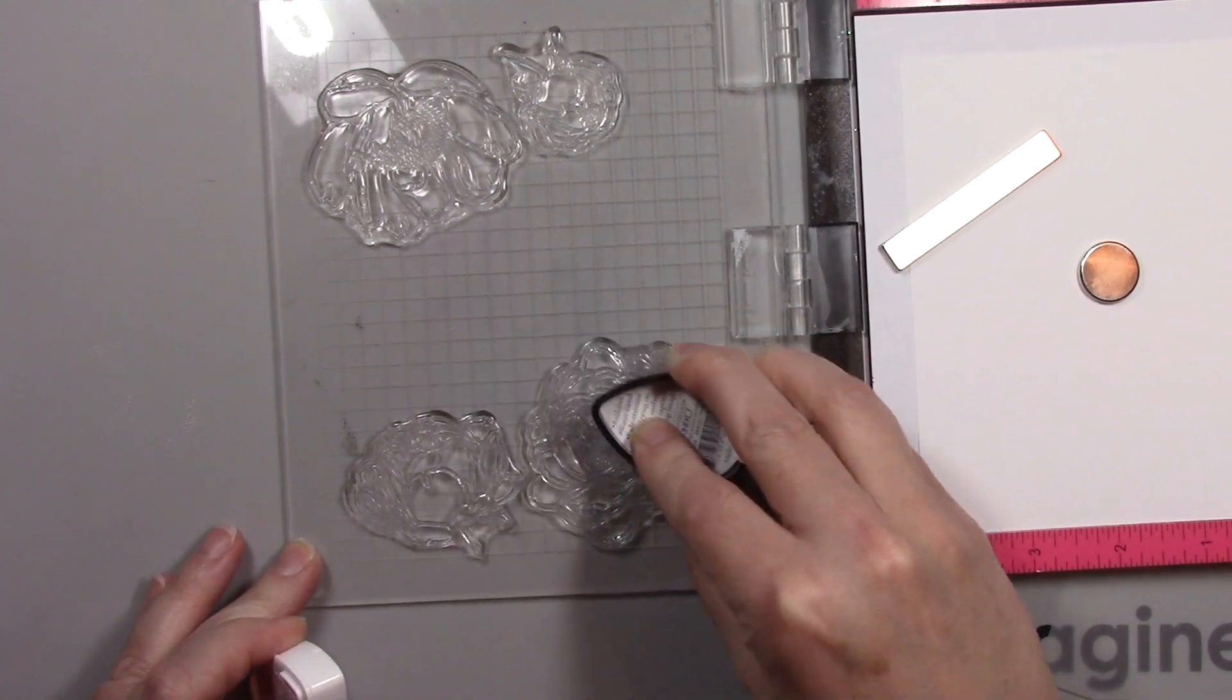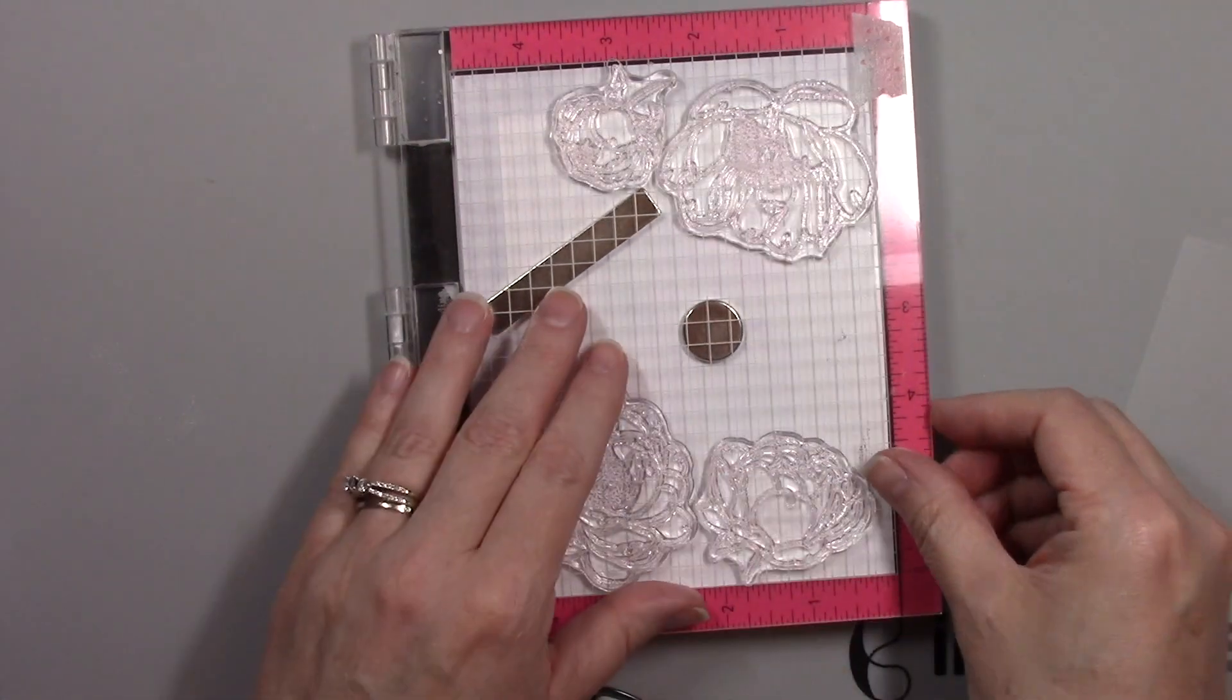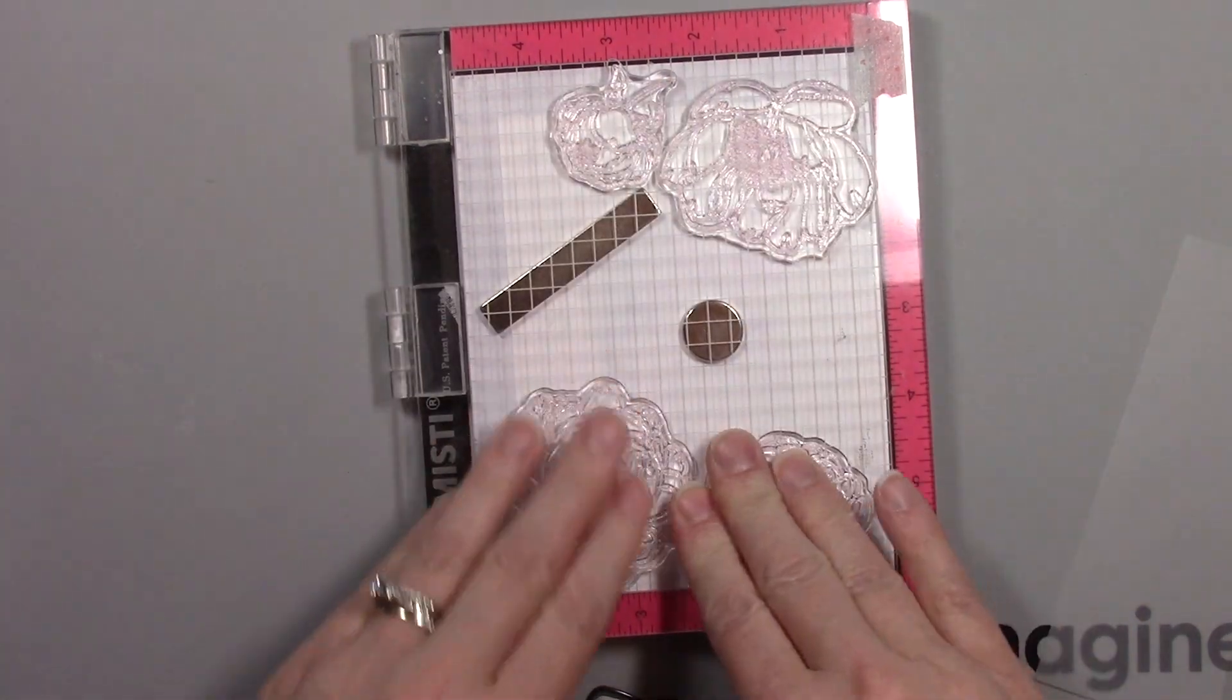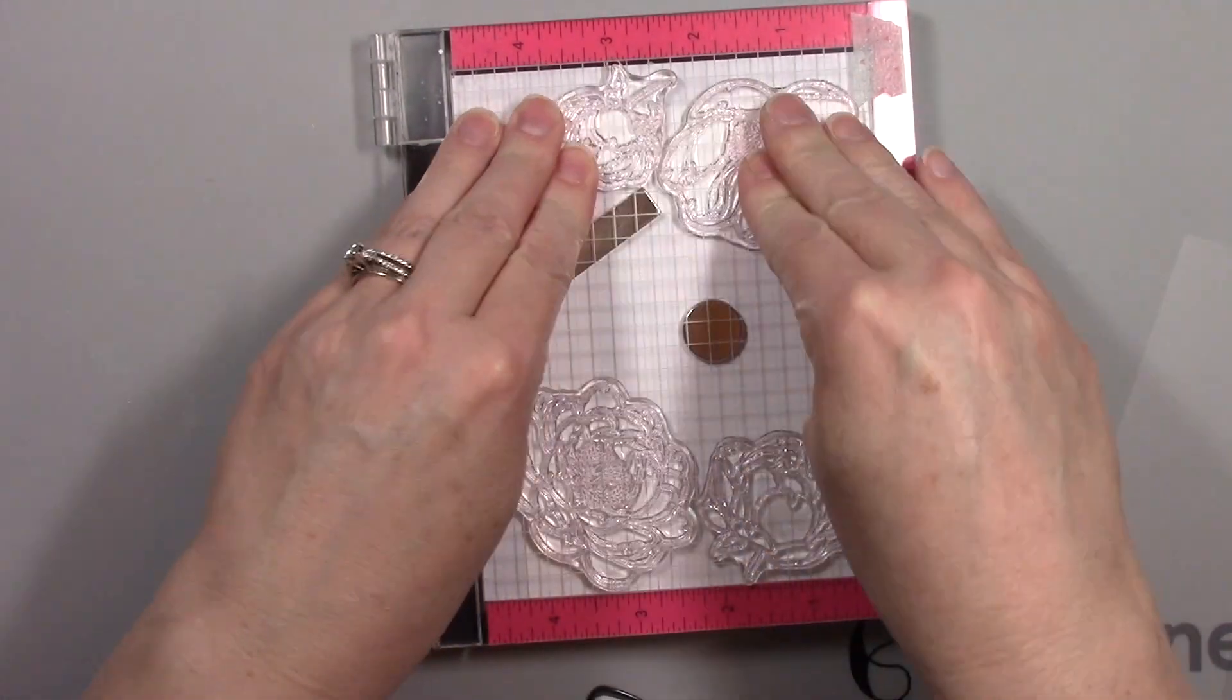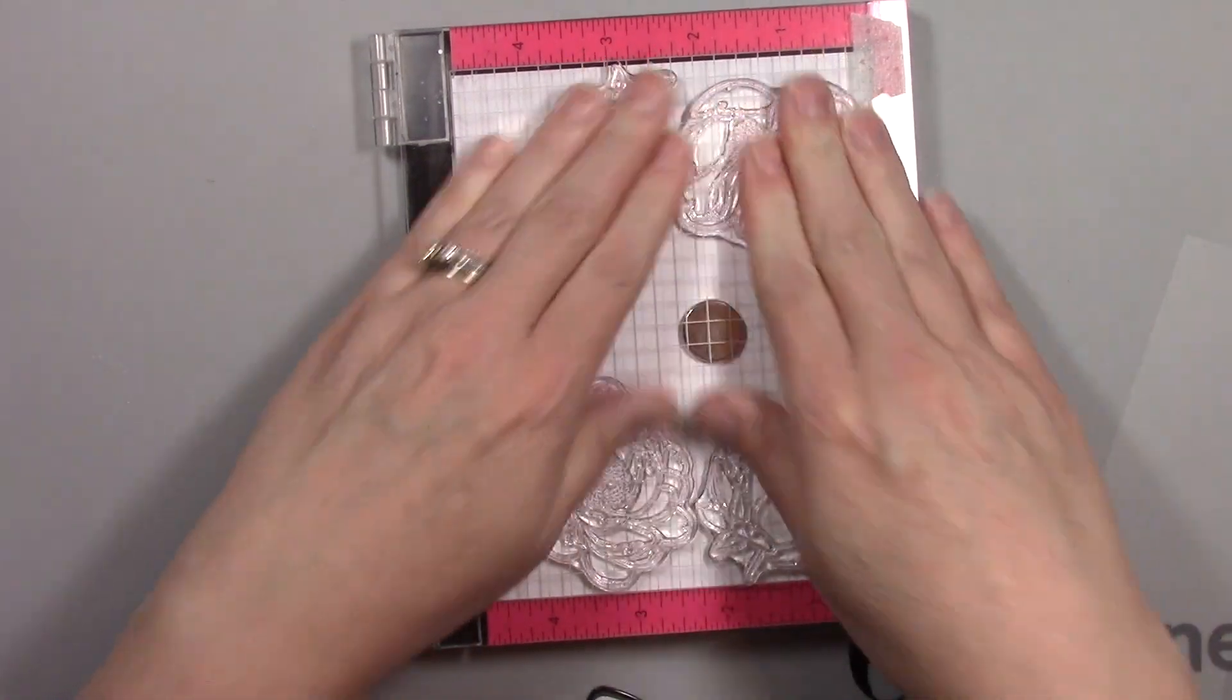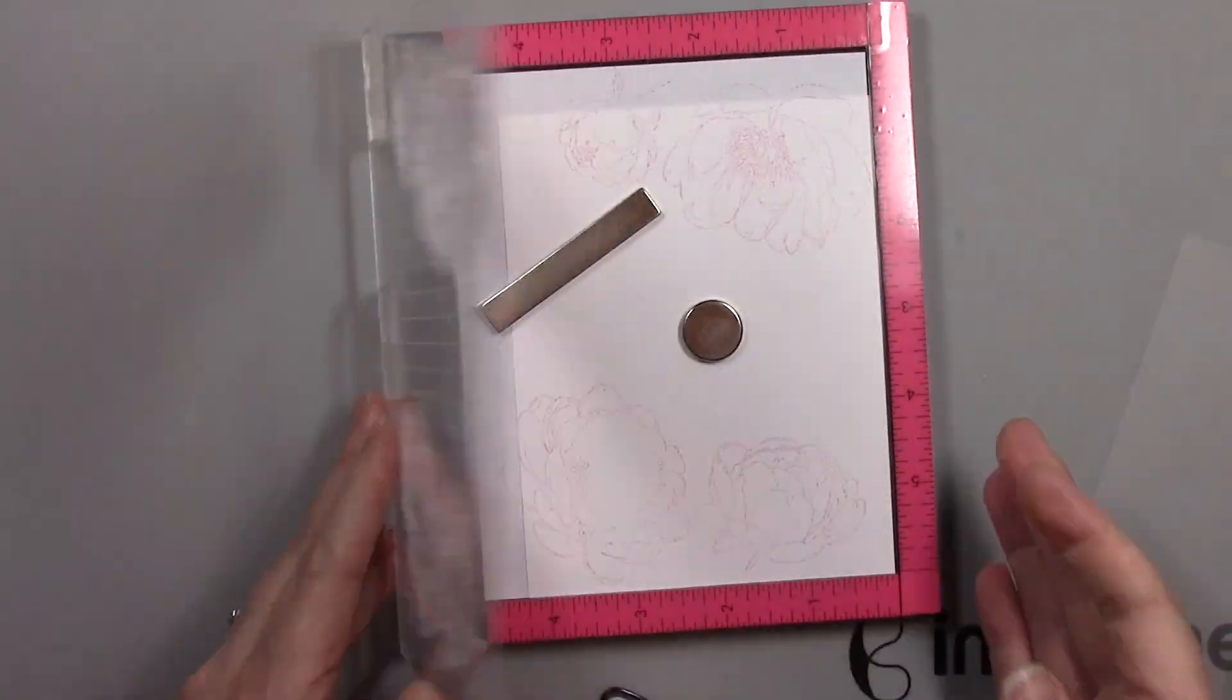I'm taking my Memento Angel Pink ink. If you don't have Angel Pink you can use another light ink. I find that this ink in particular is very useful when you want a light stamping for no-line coloring.